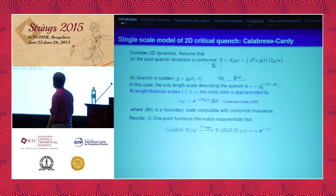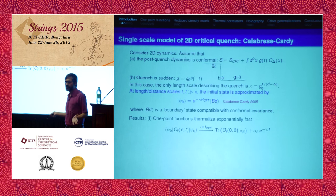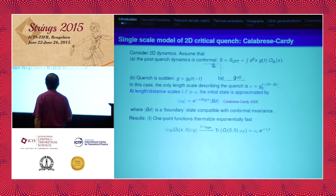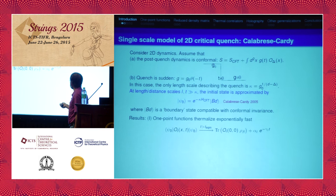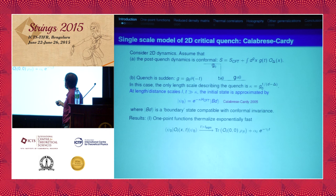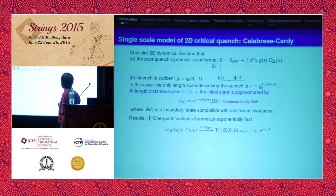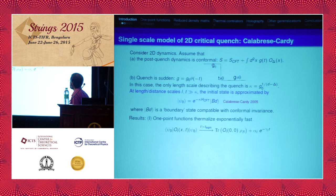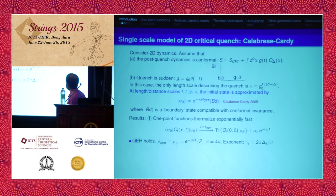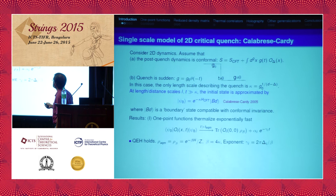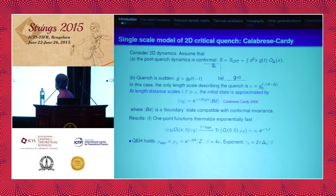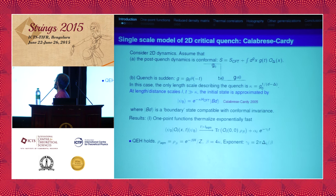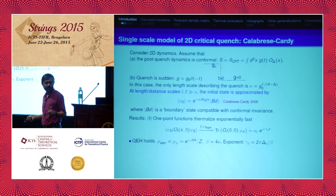This was the assumption of Cardy and Calabrese: a single-scale quench can be modeled by what I call the Calabrese-Cardy or CC state. They found a beautiful and very general set of results. For example, one-point functions thermalize exponentially fast — there is an equilibrium behavior given by a certain equilibrium ensemble, and it approaches that value exponentially fast. The inverse temperature beta of the equilibrium ensemble is related to the cutoff parameter as beta equals 4 kappa, and the thermalization exponent is related to this cutoff parameter, or beta, and the conformal dimension of the operator.